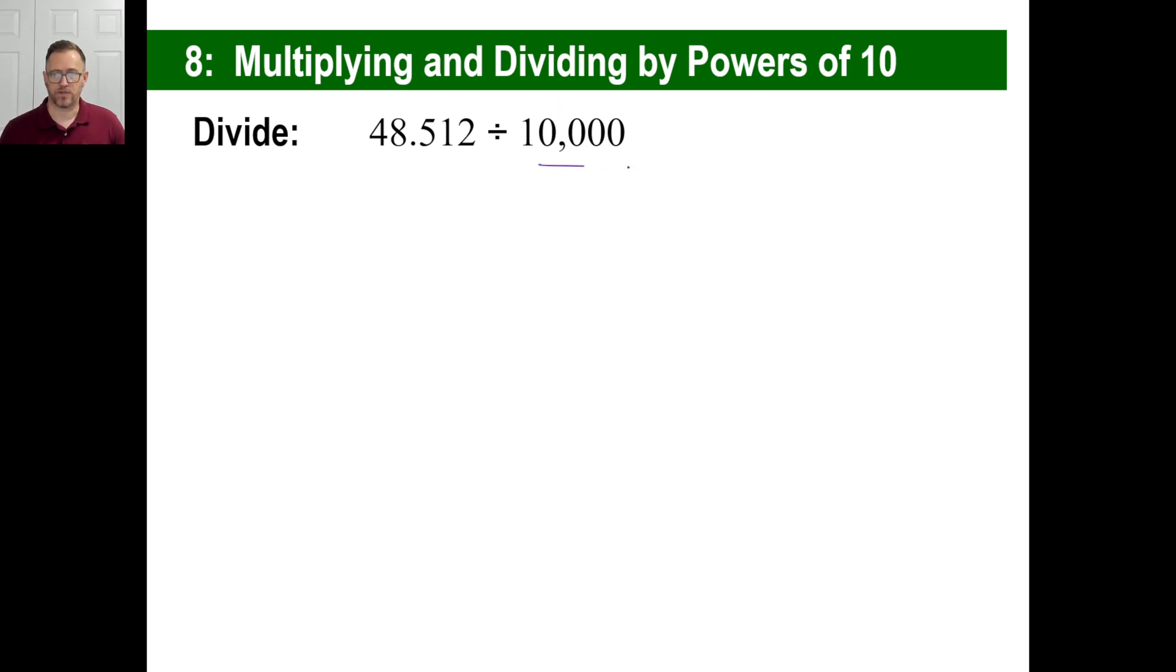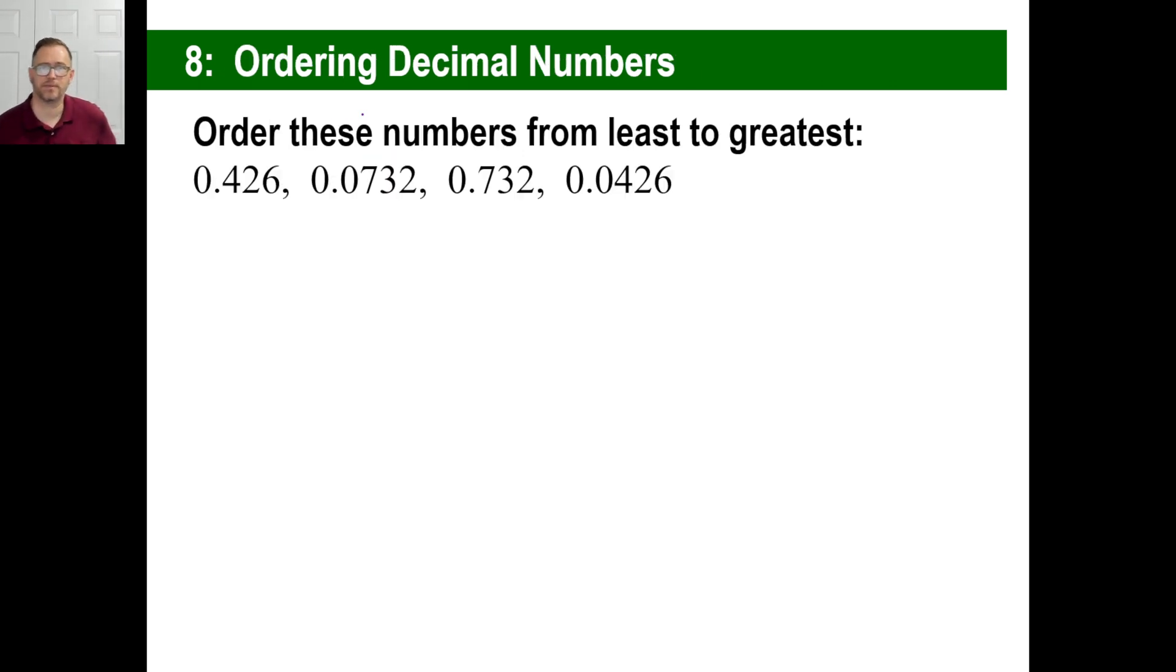Okay. Same thing here. We got four zeros now. And it's right here. So we go one, two, three, four. Point zero, zero, four, eight, five, one, two. Dollars to it.